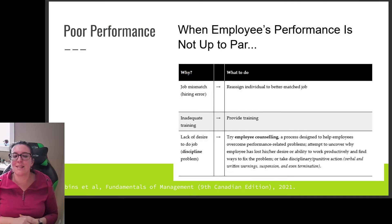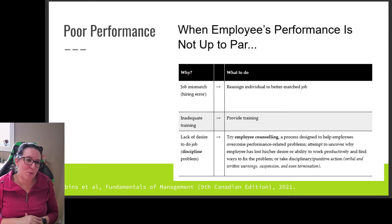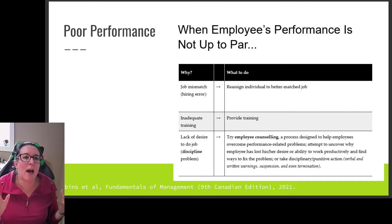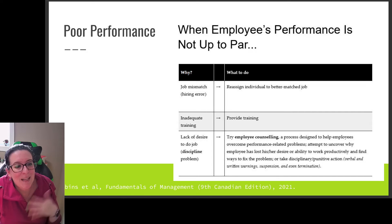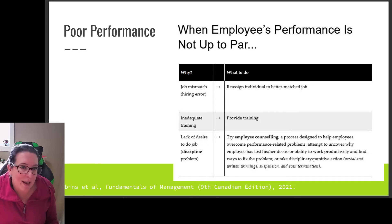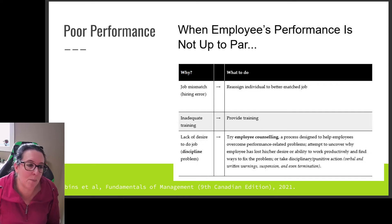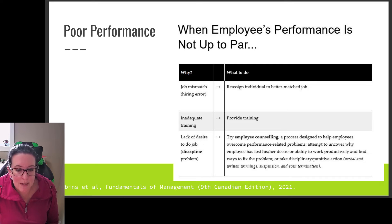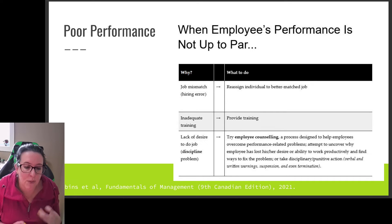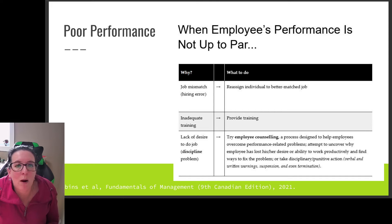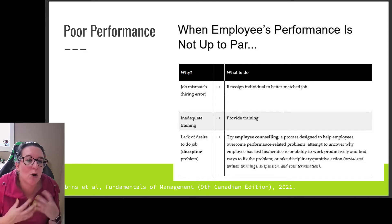When it comes to poor performance, we need to look at why the employee is performing poorly. Is it because they don't have the necessary training, resources, and skills — a training issue we can address by providing training? Is it a job mismatch, where we need to put them into a different role that better matches their skills? Or is it a motivation issue — the employee lacks energy, direction, or persistence — and we go back to our motivation theories to figure out how to create that motivation.